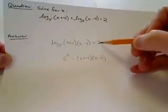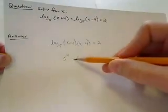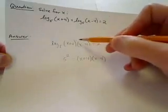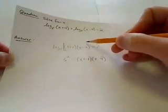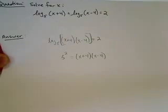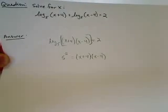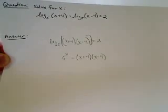So we take the base, raise it to what it's equal to and set it equal to what's inside the logarithm. Now this whole thing really goes together. It's part of the logarithm. So that's why we set it equal to x plus 4 times x minus 4.